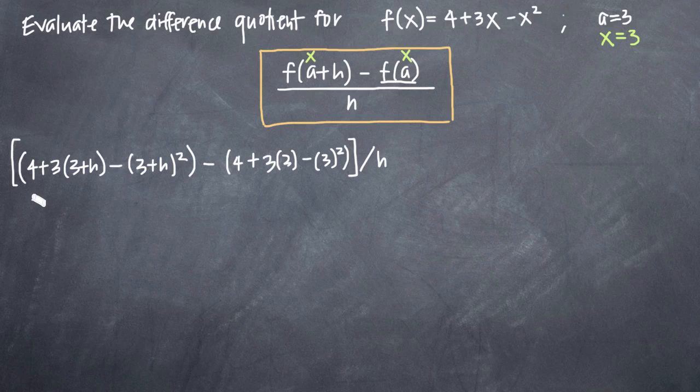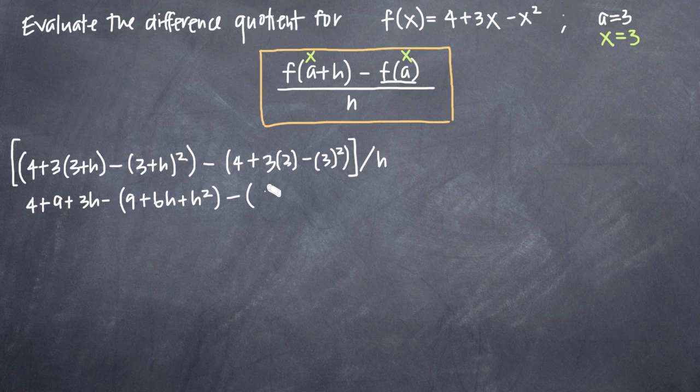So here in our numerator, we'll end up with 4 + 9 + 3h minus, now we need to square the quantity 3+h. So we'll get 9 + 6h + h². Then we'll get minus, and inside the parentheses here, we'll get 4 + 9 - 9. That's our numerator, and again, we still need to divide through by h.